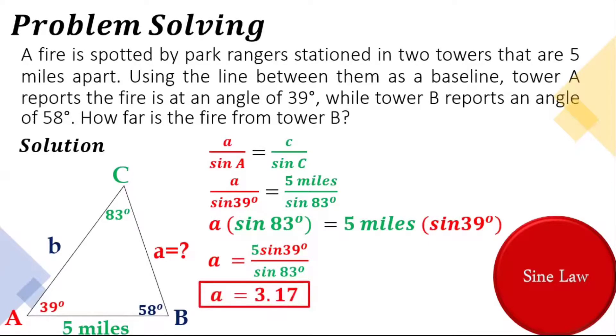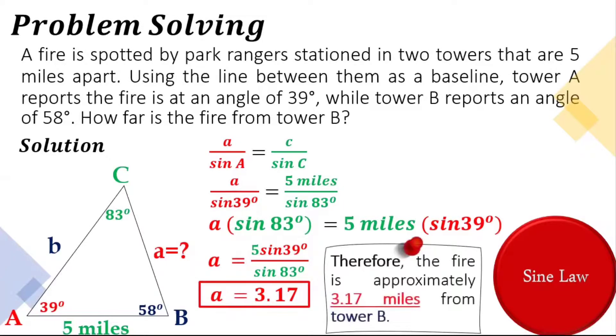So since we compute using our calculator, our approximate distance will be a is equal to 3.17. Therefore, the fire is approximately 3.17 miles from Tower B.